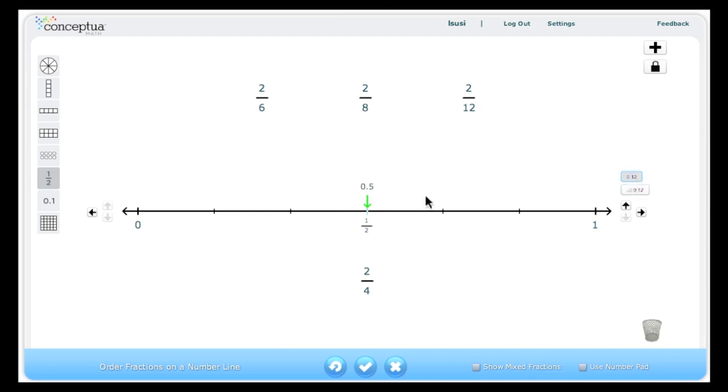Clicking the top button shows the decimal value. 2 sixths will be quite easy to place, since my tick marks are every sixth. So I can count them 1, 2, and place the fraction here.